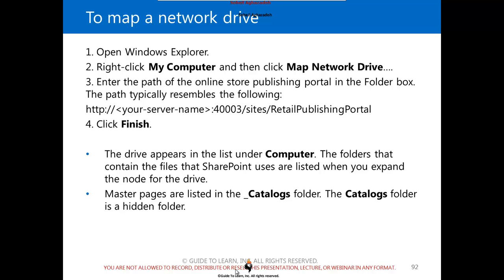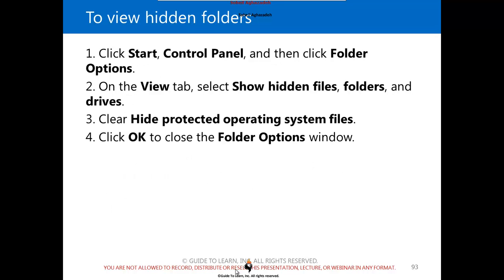In order to map a network drive, after you publish the online store, you can map to that specific URL location to access those directories. The drive then appears in the list on the computer, and you can manage, navigate, and modify those specific files. Some files might be hidden, so make sure you clear the option named 'Hide Protected Operating System Files' to see all available files, because certain files are in the AppData local directory under the username, and that specific folder is hidden.